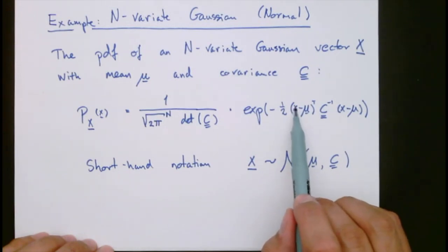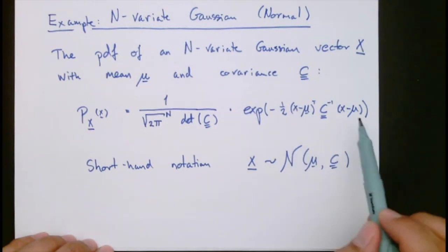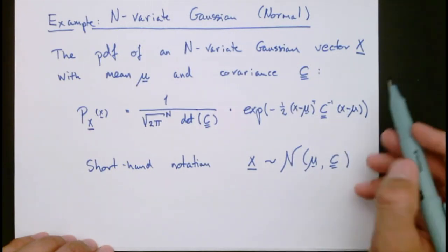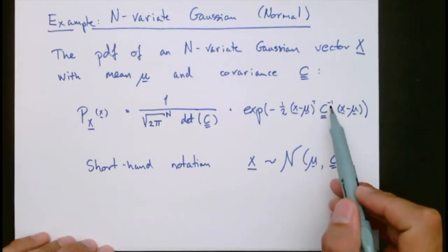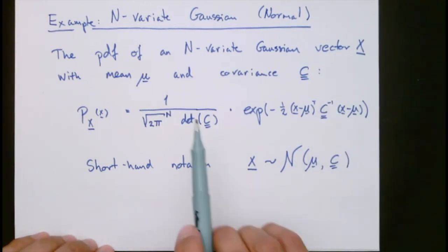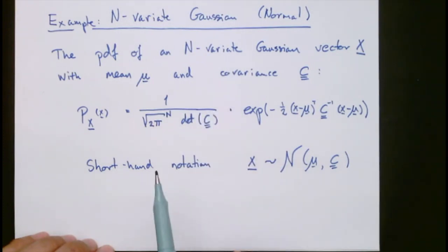We have the deviation from the mean mu of x. The same here. It should be vectors. And then we have this covariance matrix here. So to define such an N-variate Gaussian, we will need the two parameters. So we include this in our shorthand notation. So we write x tilde N of mu and C, where mu is the mean and C is called the covariance matrix of the vector x.